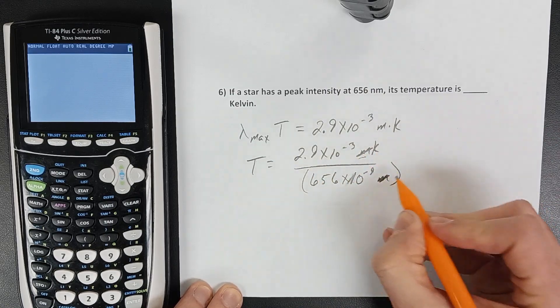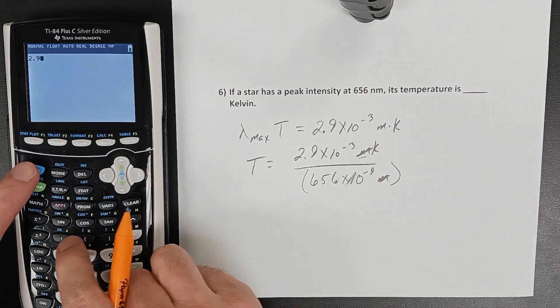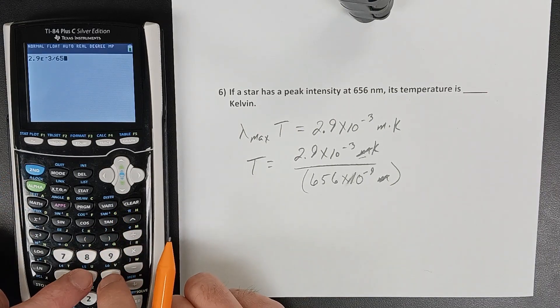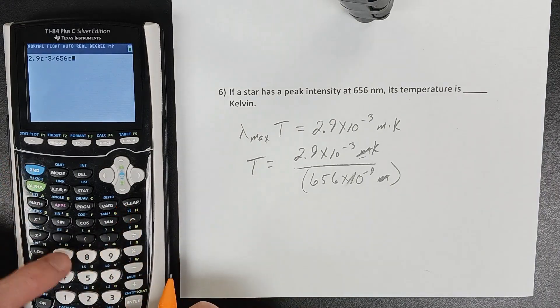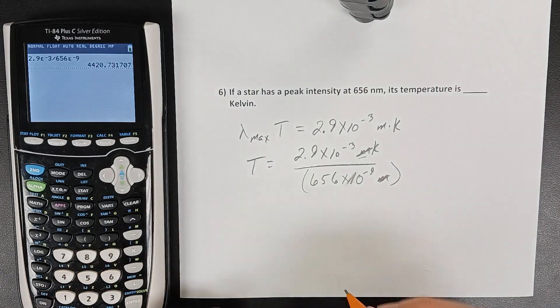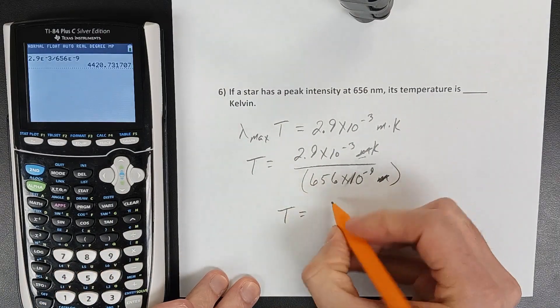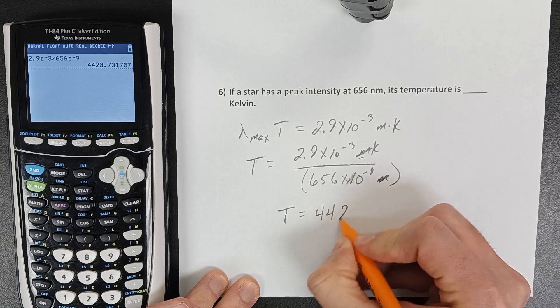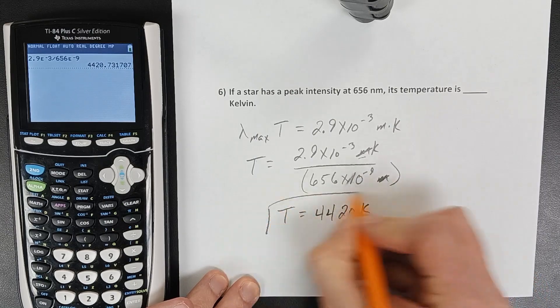Those meters will cancel out. So, 2.9 times 10 to the negative 3 divided by 656 times 10 to the negative 9, and we get a temperature of 4420 Kelvin.